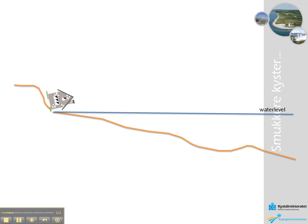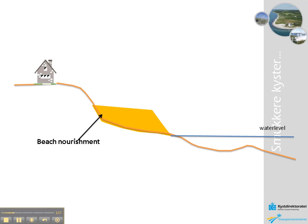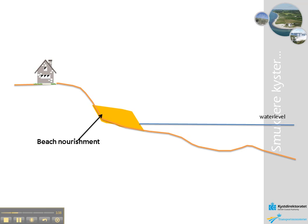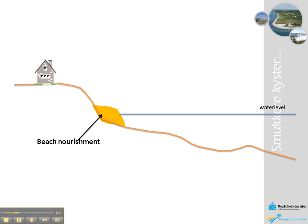But what happens if the house is protected by beach nourishment? We have the same situation as before, except that we have a beach nourishment in front of the house. The storm approaches again, the water level rises, and erosion takes place — but only in the beach nourishment. After the storm has ended, the erosion has only taken place in the nourishment sand, and the house is still standing.